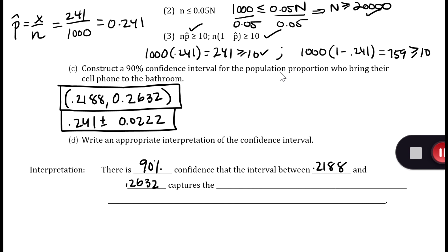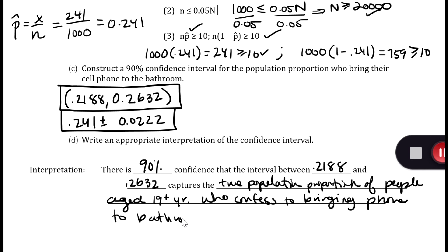That's what we want to look at - the true population proportion of people aged 19 years or more who confess to bringing their phone to the bathroom every time. And that is your confidence interval.